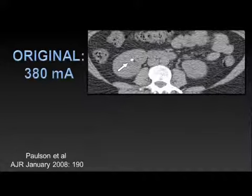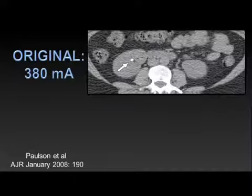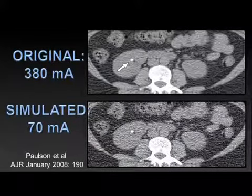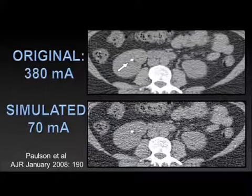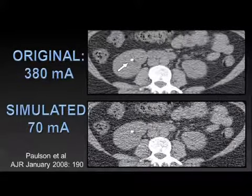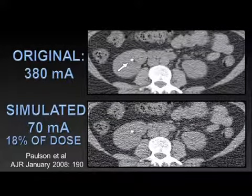How does this work in reality? In the so-called stone belt — southeastern US down to Texas and Arizona — we scan a lot of patients with flank pain for stones. The nice thing about stones is they're very high attenuation compared to background soft tissue, so you don't need a very high-quality scan to diagnose a stone. Here's an image at 380 mA and the same image at a simulated 70 mA — you can see that stone just fine. Going from 380 down to 70 mA would be about an 82% diminution in dose.